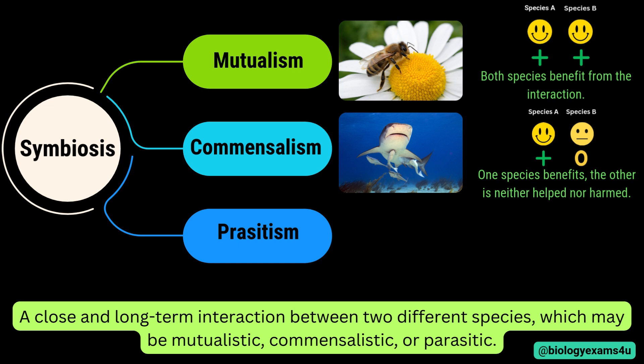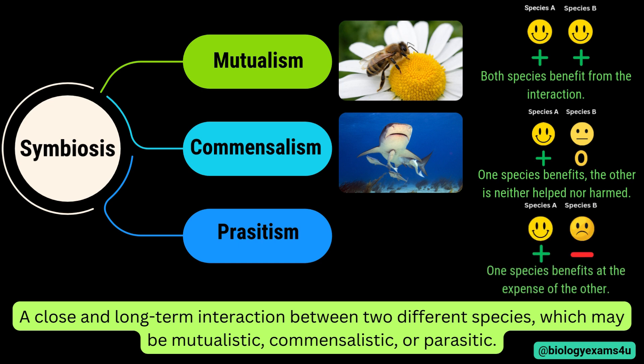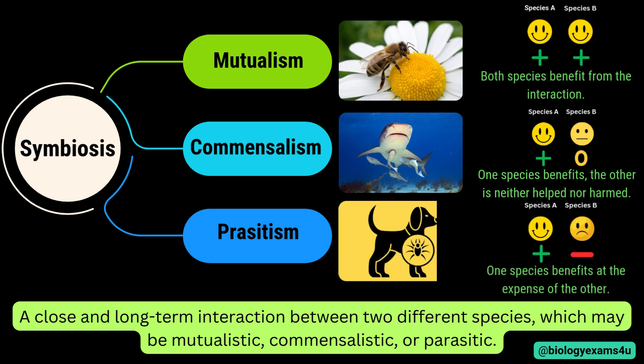In parasitism, one species benefits at the expense of the other. An example is fleas on dogs and cats — these fleas feed on the blood of dogs causing discomfort and other health issues. Another example is tapeworms in mammals, which live in the intestines of hosts absorbing nutrients.